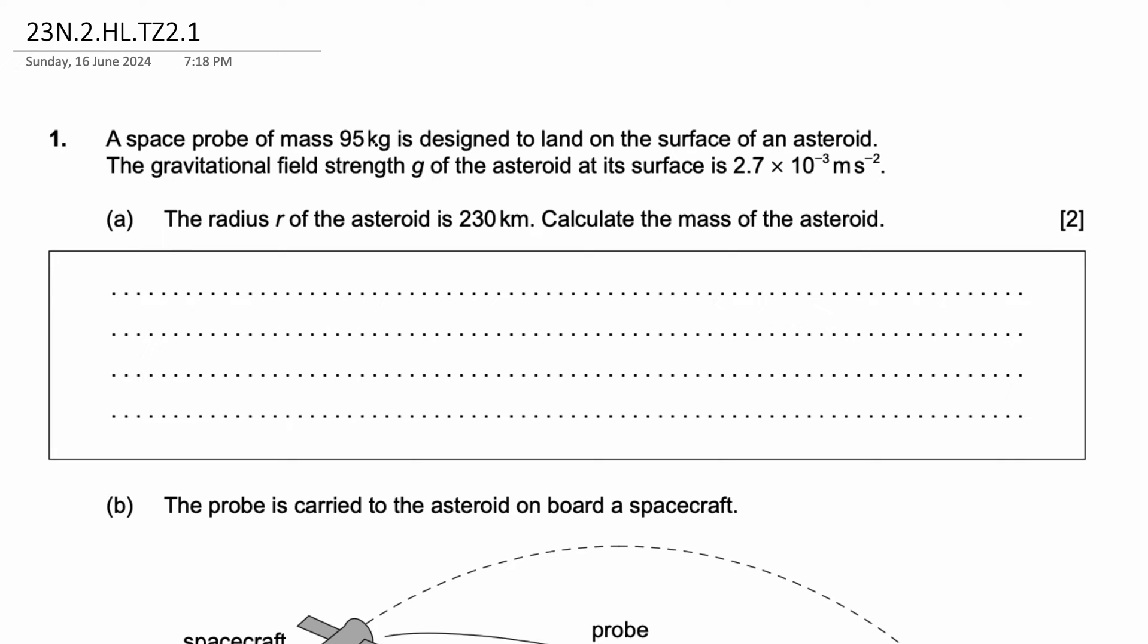A space probe of mass 95 kilograms is designed to land on the surface of an asteroid. The gravitational field strength g of the asteroid at its surface is 2.7 × 10^-3 meter per second square. Part A, the radius r of the asteroid is 230 kilometers. Calculate the mass of the asteroid.